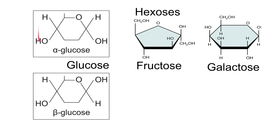Everything else is exactly the same. If asked in the exam to draw these molecules, you need to draw this hexagon shape, the groups on either side, the point at the top representing carbon five and six, and the oxygen. Importantly, where you draw bonds down to the hydroxyl groups, the bond must go to the oxygen atom, not to the hydrogen atom. Oxygen can form two bonds — one to the hydrogen and one to the carbon.